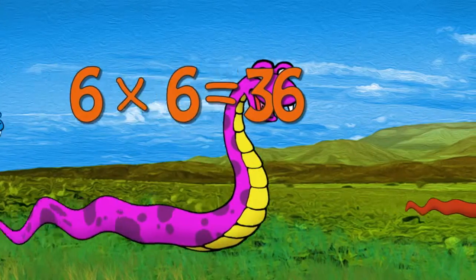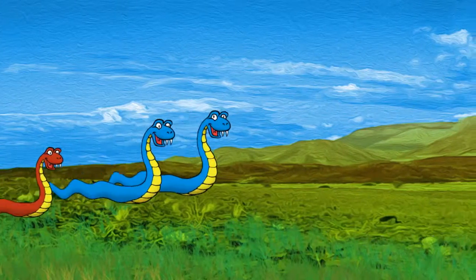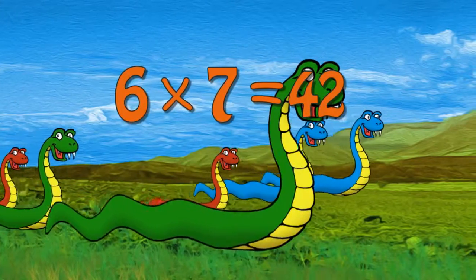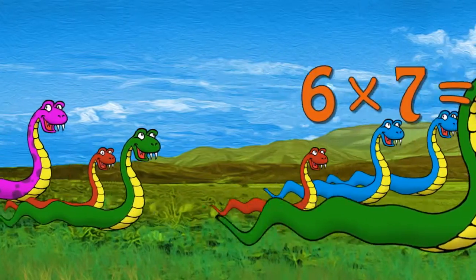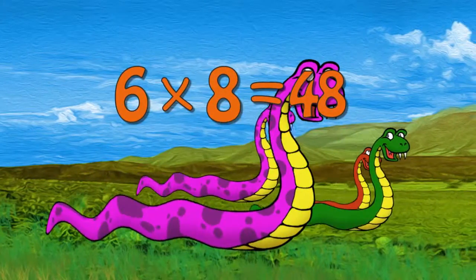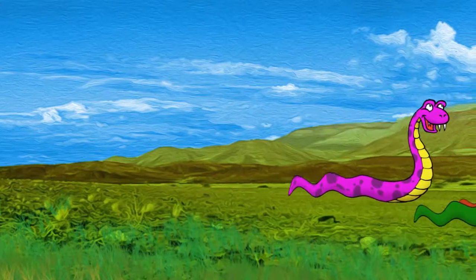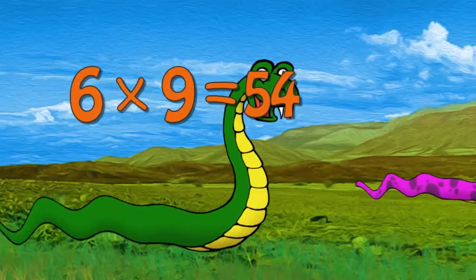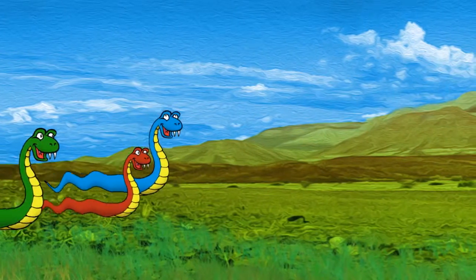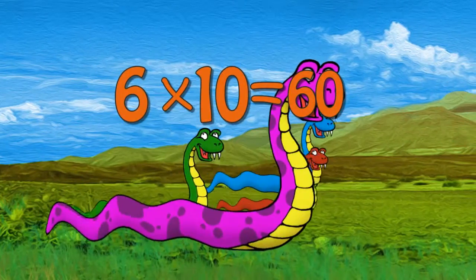Six times six is thirty-six. Six times seven is forty-two. Six times eight is forty-eight. Six times nine is fifty-four. Six times ten is sixty.